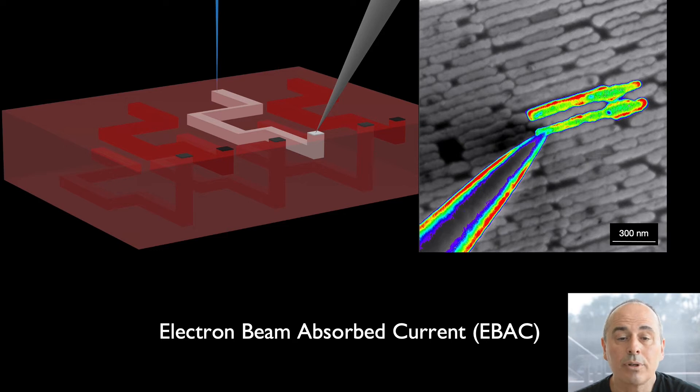Electron Beam Absorbed Current is similar to EBIC. In contrast to EBIC, this method does not rely on the presence of p-n junctions. Rather, the probe tip simply collects those electrons that reside in the contact in metal lines without being amplified by the generation of electron hole pairs. EBAC is often used to visualize opens or shorts in metal line connections.